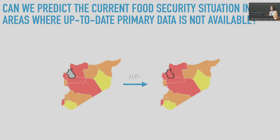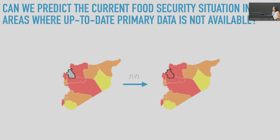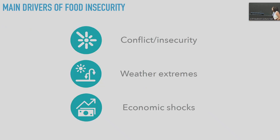The challenge remains: we cannot do this everywhere at all times — it is still time-consuming and expensive. The question posed when I joined the World Food Programme was: can we use secondary data from new sources and methods from data science and machine learning to estimate food insecurity indicators for areas where we don't have up-to-date primary data? The first step was to consult food security experts to identify the main drivers.